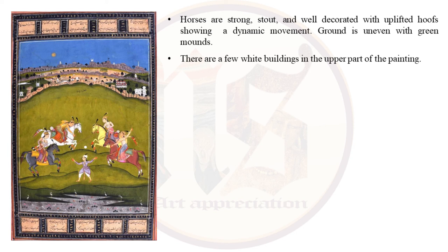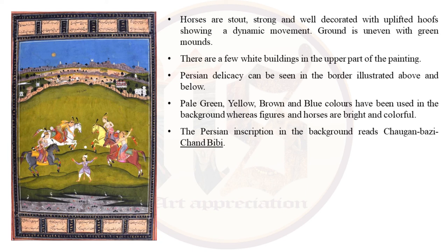Persian delicacy can be seen in the border illustrated above and below the painting. Pale green, yellow, brown and blue colors have been used in the background, whereas figures and horses are bright and colorful. The Persian inscription in the background reads 'Chogan Bazi, Chand Bibi.' This painting provides a clue to the liberal lifestyle of the Deccan and depicts the interest of royal women of that time in the field of sports.